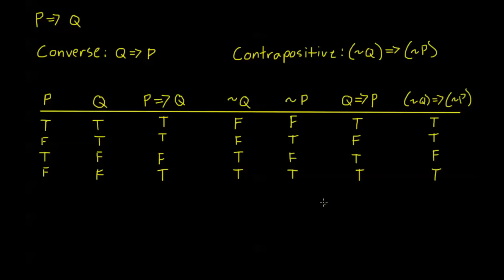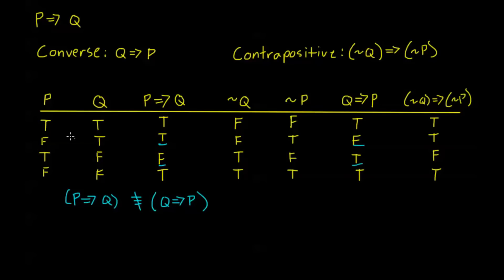We see right away that P implies Q is not an equivalent statement to Q implies P. Remember, two propositions are equivalent if their truth values are exactly the same. Here, for P implies Q I have T, T, F, T, whereas for Q implies P I have T, F, T, T — both of those middle rows are different, so these are not equivalent statements in general. Sometimes they are equivalent, and we'll talk about that case in the next video — it's called a biconditional statement, meaning P implies Q and Q implies P.